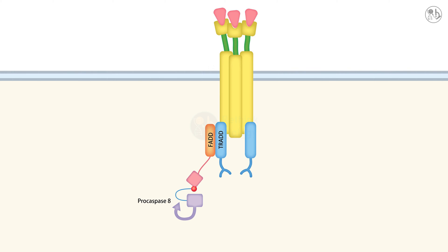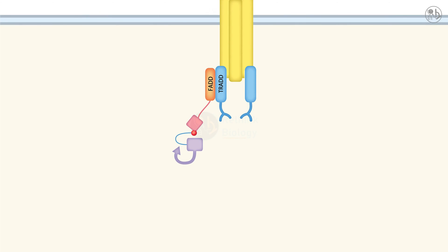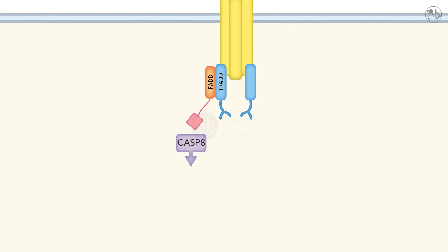ProCaspase-8 also contains a DED, which allows it to bind to FADD and form a complex called the death-inducing signaling complex, or DISC. The formation of DISC results in the auto-cleavage of ProCaspase-8, activating Caspase-8.